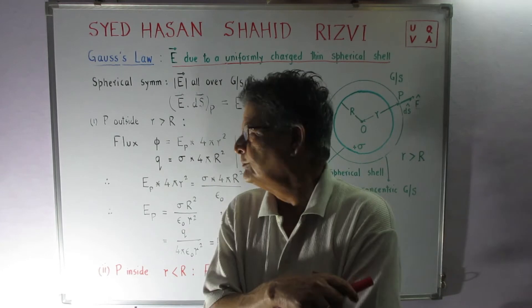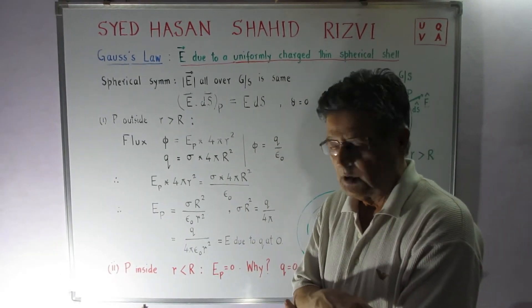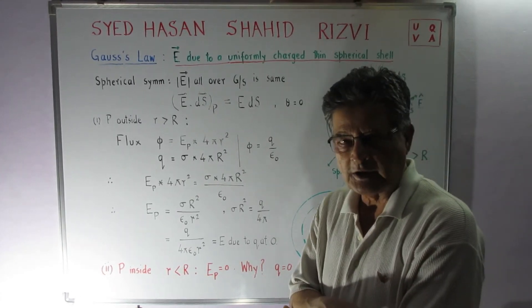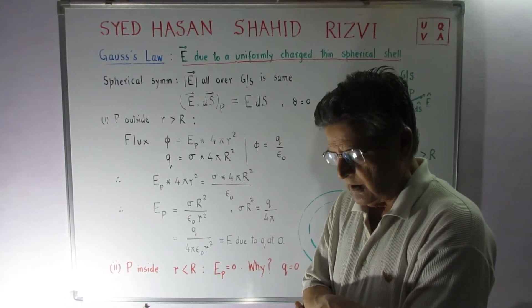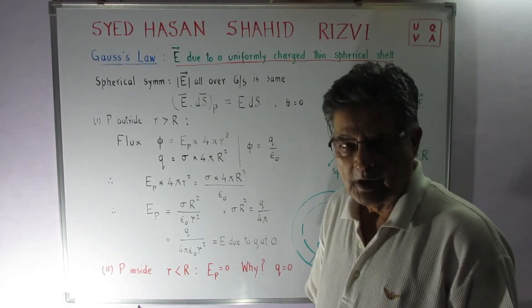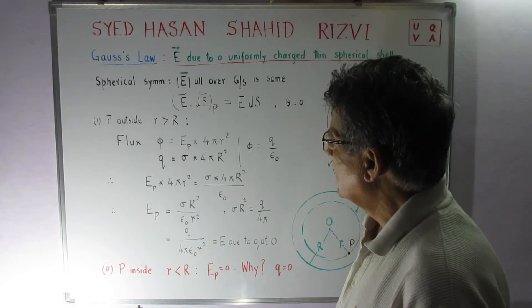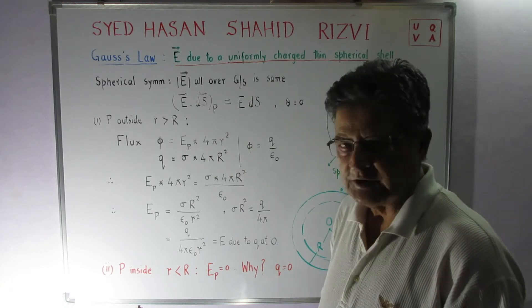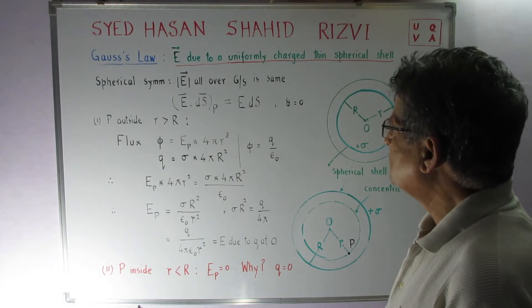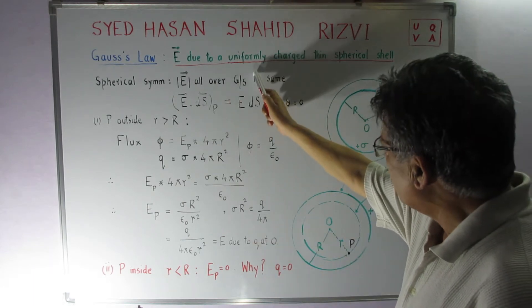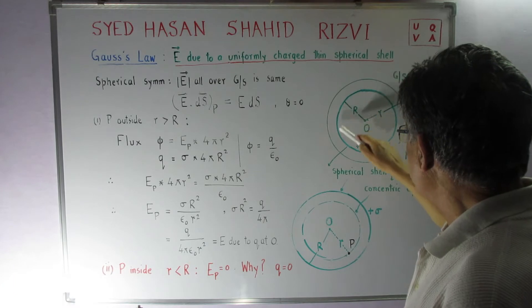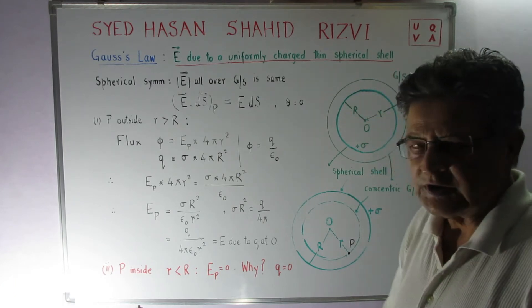Welcome back. We will continue to use Gauss's law, which I already applied in the case of a linear pencil of charge and also an infinite sheet of charge, where we found the value of the electric field at distance r. Right now we are going to do a third exercise: the electric field due to a uniformly charged thin spherical shell, with a charge density equal to sigma coulombs per meter squared.